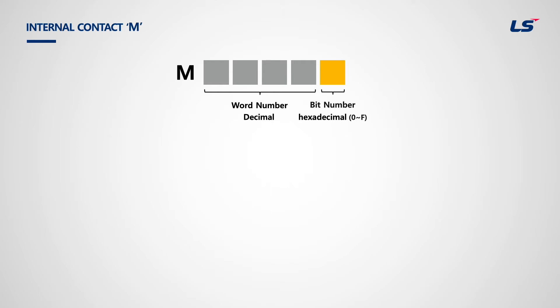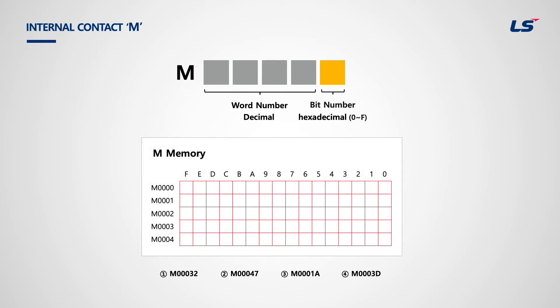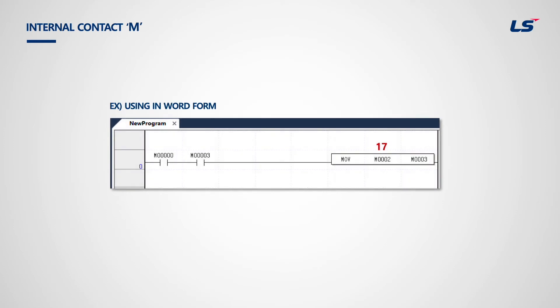Next is internal contact M. M and P are very similar; the only difference is that M is internal. For example, M32 is bit number 2 of word M3. When M0 and M3 are on, M2 is moved to M3. Note that A contact M3 has four zeros while M3 in the move function has three zeros. The move function requires word data while only bit can be used in contact. In this example, decimal value 17 is moved from M2 word to M3 word.